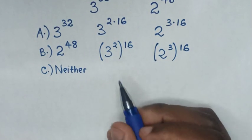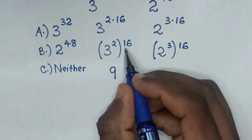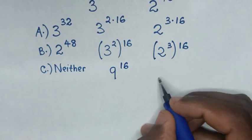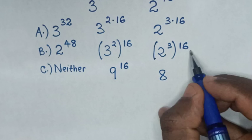Then, 3 power 2 is 9 power 16. And 2 power 3 is 8 power 16.